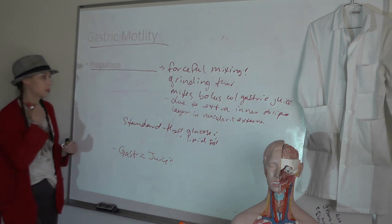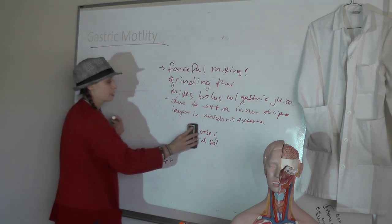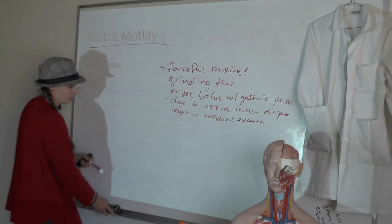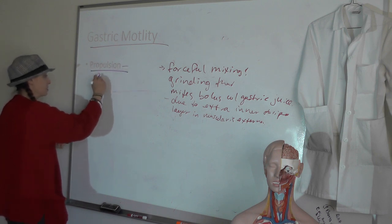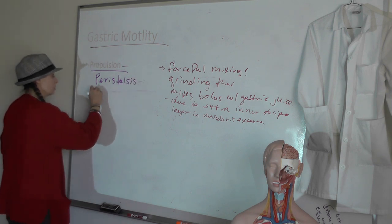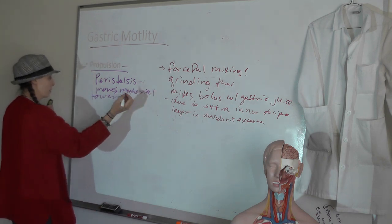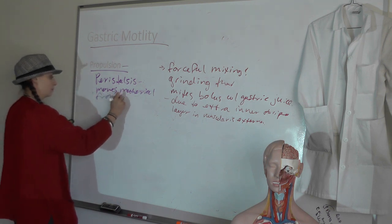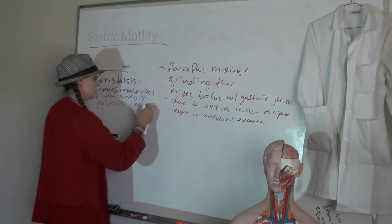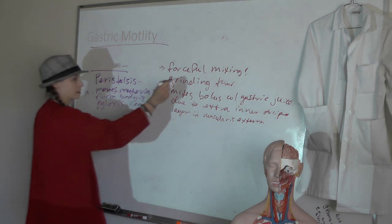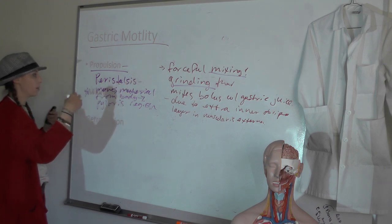For gastric motility, we've already talked about the forceful mixing and grinding, which is part of mechanical digestion but also motility because it's muscle contraction. For propulsion, our primary means throughout the entire GI tract is peristalsis. Peristalsis moves material toward the pylorus region — from the body to the pylorus. As we get down into the pylorus region, we get forceful mixing and grinding. So propulsion is peristalsis — wave-like contraction of the muscularis externa moving material forward.